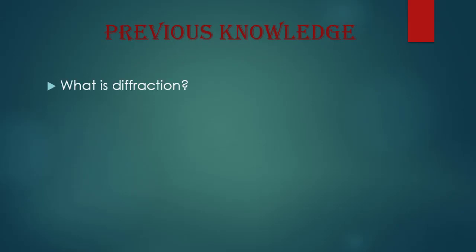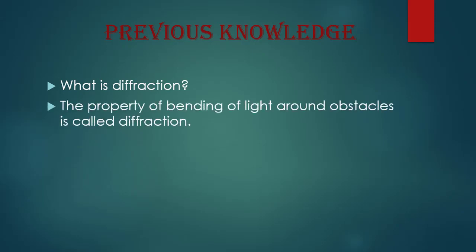What is Diffraction? The property of bending of light around obstacles is called Diffraction. Light travels in a straight path, but when it strikes any obstacle, it bends around the obstacle. The property of bending of light around obstacles is called Diffraction.